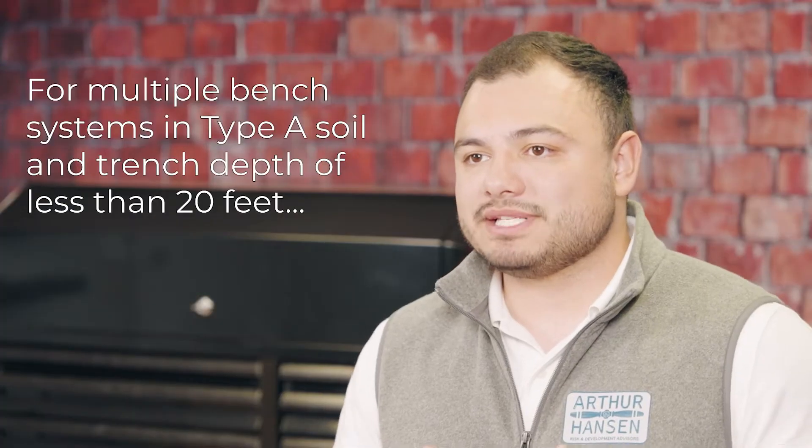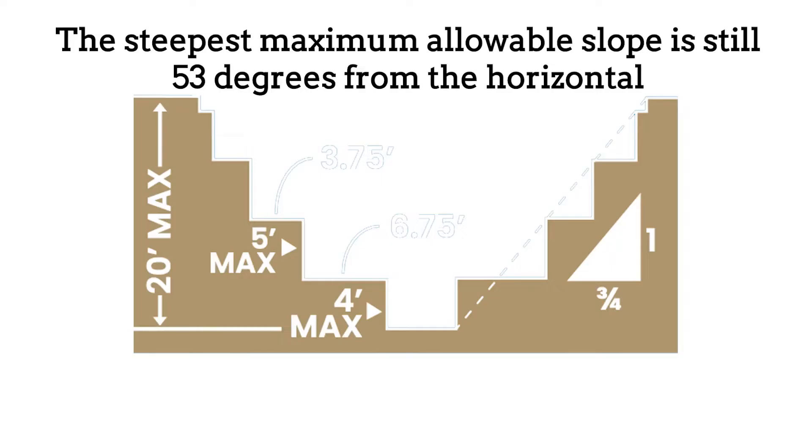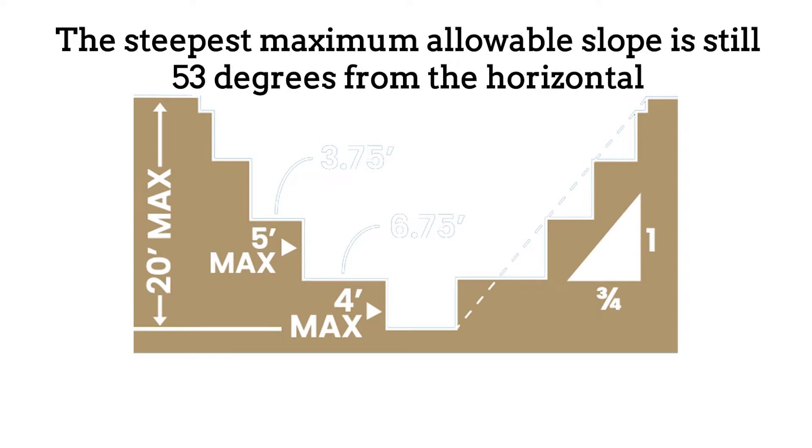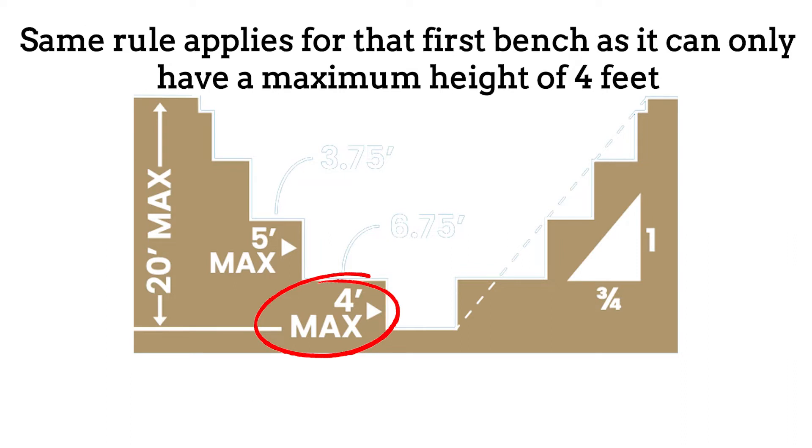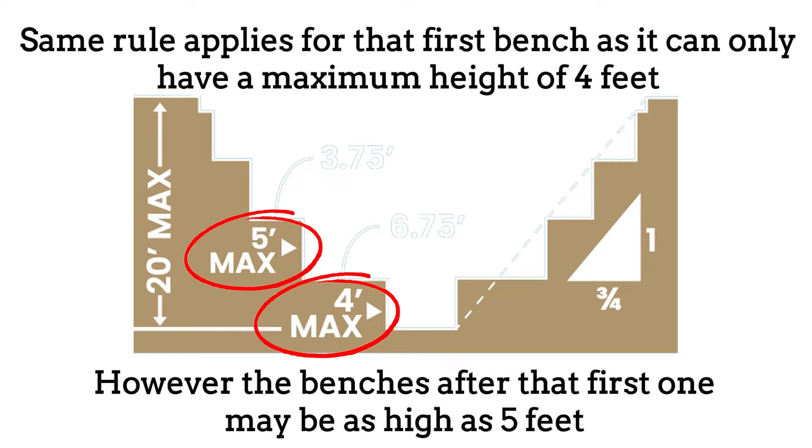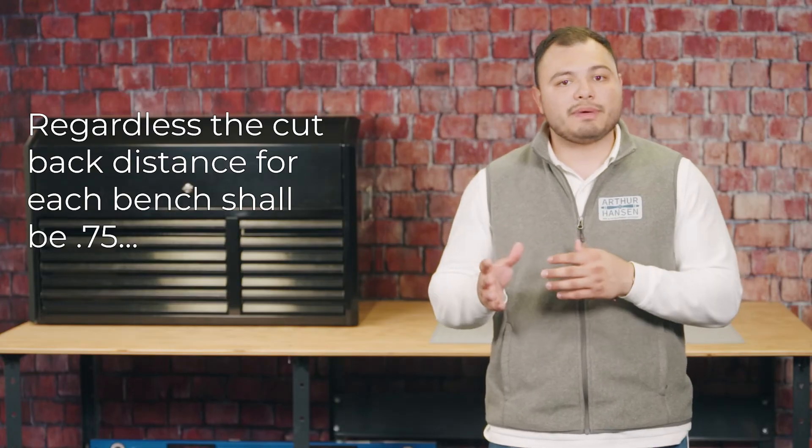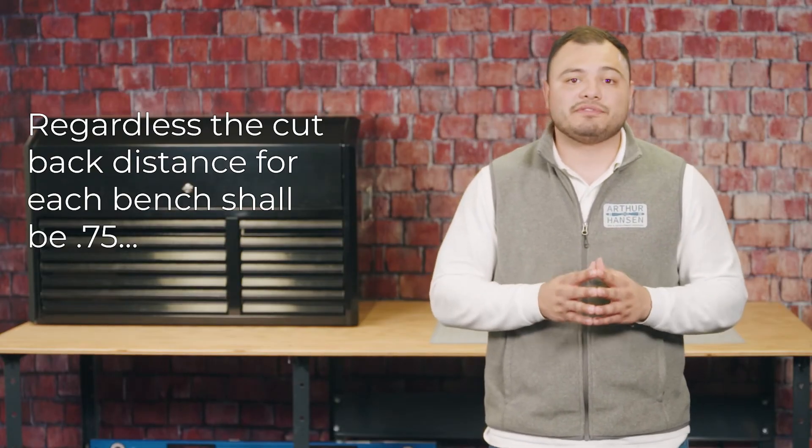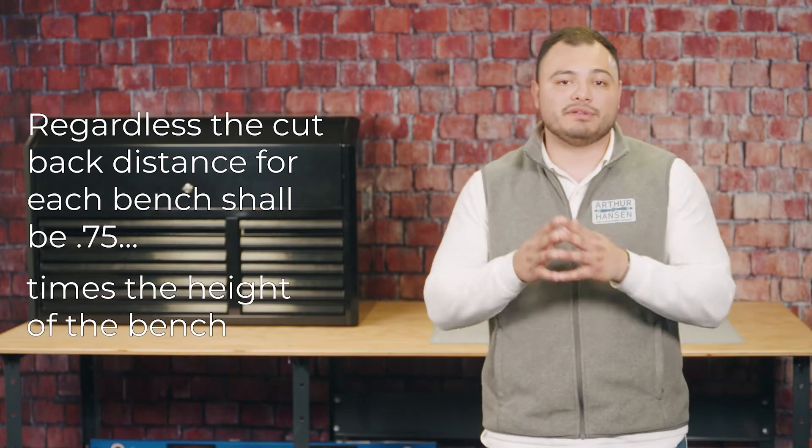For multiple bench systems in type A soil with a trench depth of less than 20 feet, the steepest maximum allowable slope is still 53 degrees from the horizontal, or 0.75 horizontal to one vertical. Same rule applied for the first bench as it can only have a maximum height of 4 feet. However, the benches after that first one may be as high as 5 feet. Regardless, the cutback distance for each bench shall be 0.75 times the height of the bench.